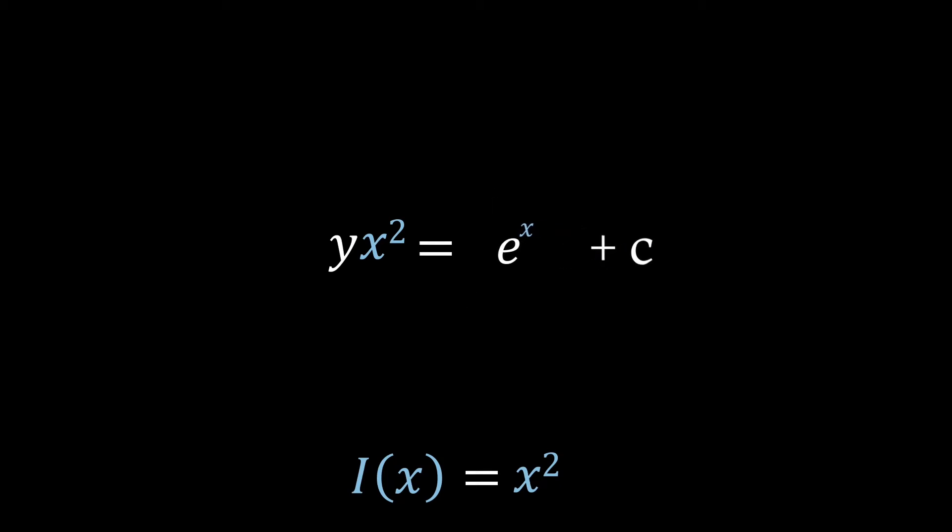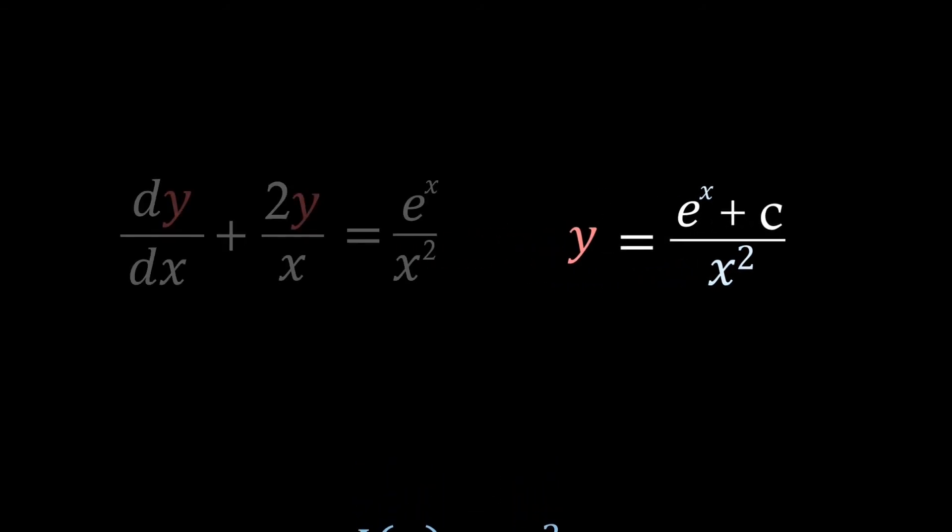Where we know if we integrate this, we're just left with e of x itself. Ultimately, now dividing both sides by x squared, we have our final solution. This actually solves our original differential equation, and it actually isn't that complicated.